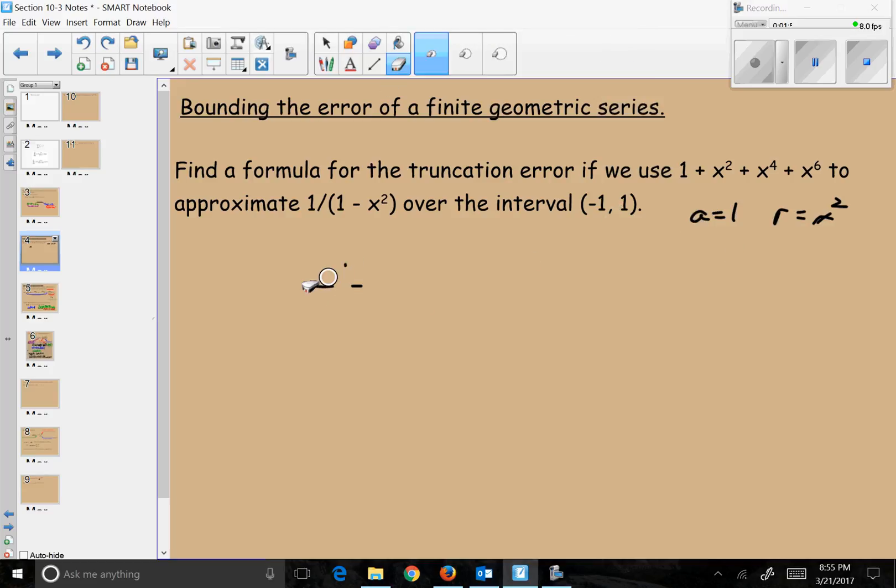If I have an infinite geometric series of 1 + x² + x⁴ + x⁶ + x⁸ + x¹⁰ + x¹², going on infinitely, that should give me a/(1-r). But what we're saying is we don't want this entire infinite series. We only want this part of it. So this is our estimate.